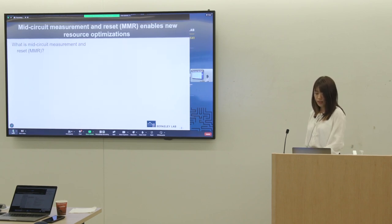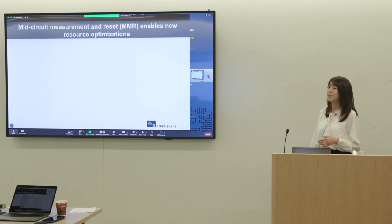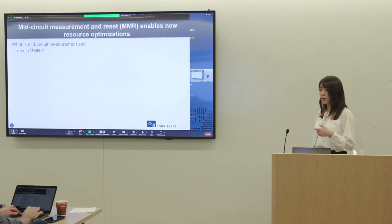In our work, we explore the technique called mid-circuit measurement and reset. It can enable some new circuit optimization opportunities. Let me explain what is mid-circuit measurement and reset. So for a quantum circuit, you already apply some gates and we measure at the end of the circuit. But here, for example, we have a one qubit circuit.